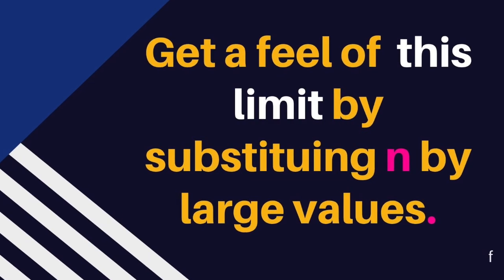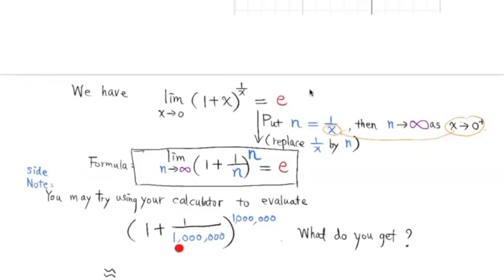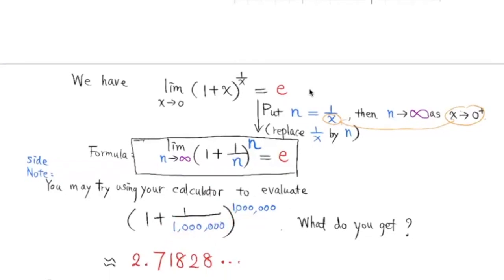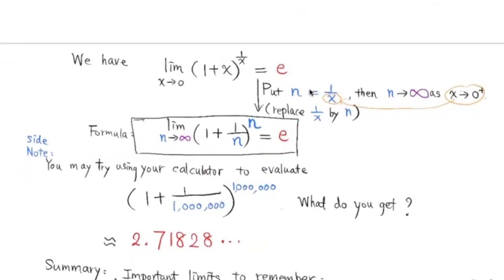Now try using your calculator and put n to be 1 million and calculate this expression. This quantity 1 plus 1 over n to the 1 million power is about 2.71828. That is very close to the exact value of the number e. We can plug in a bigger n, and the result will be even closer to e.